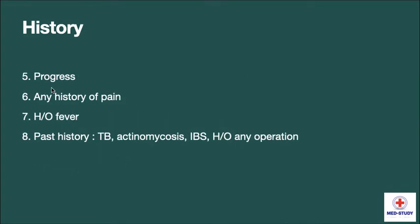Fifth is progress. Sixth is any history of pain. Seventh is history of fever. Eighth is past history of TB, actinomycosis, inflammatory bowel disease or syndrome, and history of any operation.